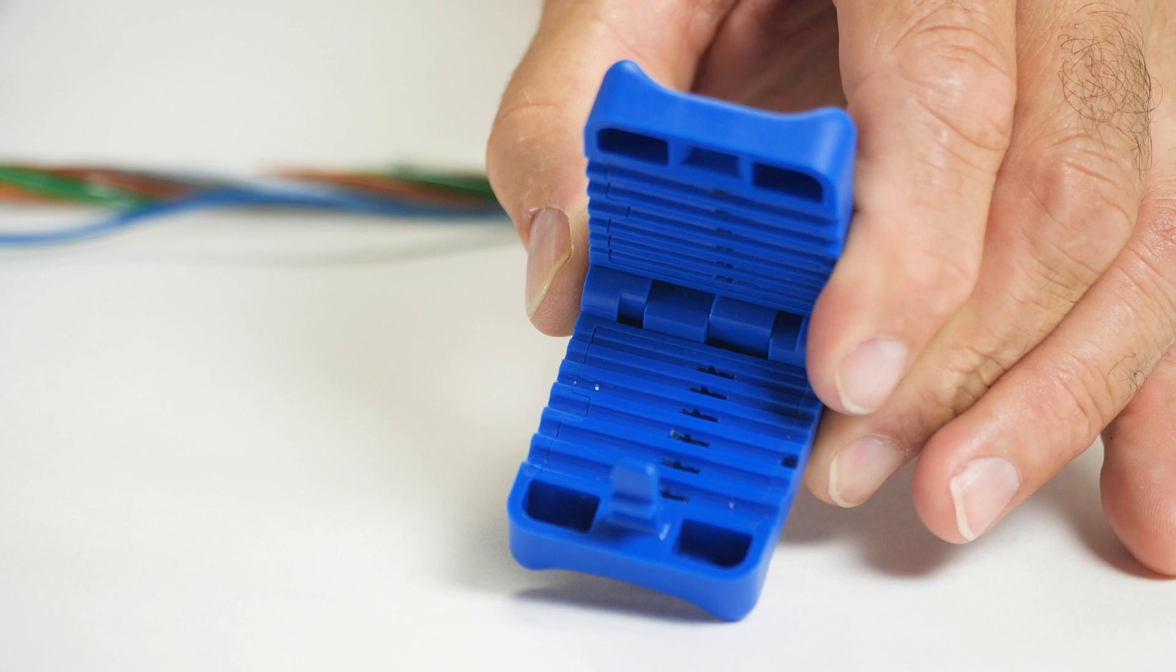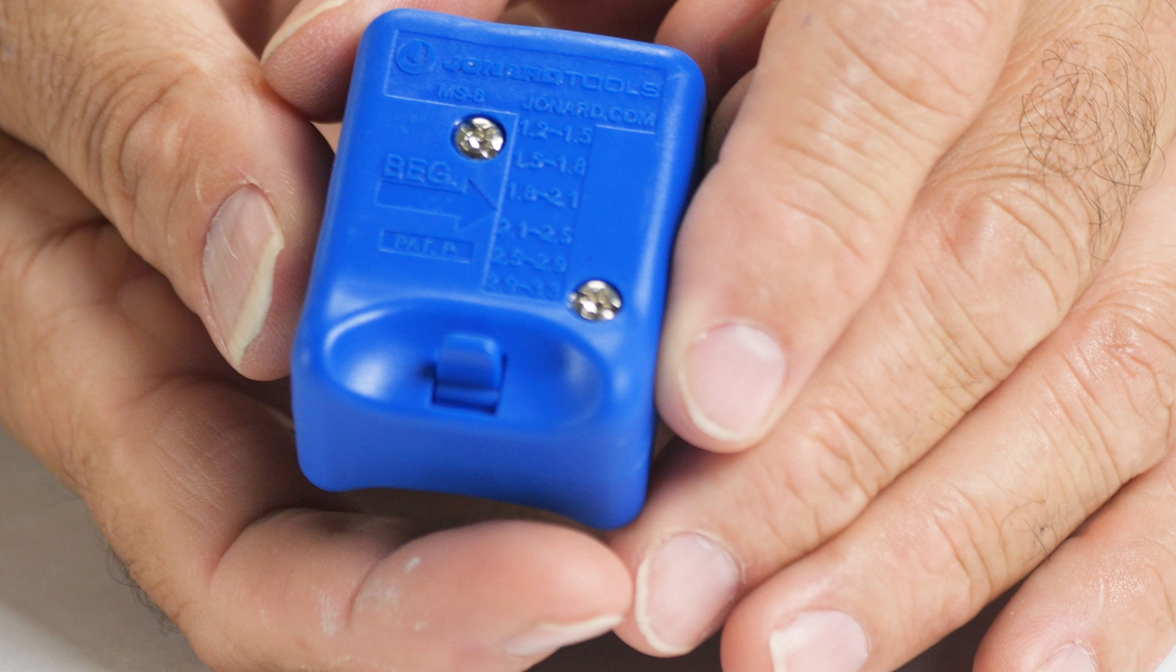Review your slitting tool size requirements and setting guidelines prior to performing the slitting process. Note, the Jonard MS6 optical fiber slitting tool will be used for this procedure. When using the Jonard slitting tool, first identify the specified slot and direction needed to properly perform the slitting process. This information can be found on the top cover of the tool, which not only shows the buffer tube diameter ranges, but also the proper pulling direction and is indicated with an arrow.